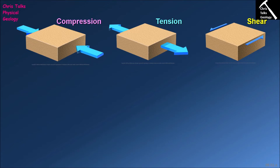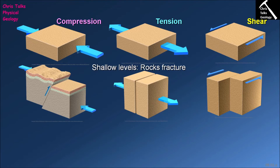Shear stress is commonly associated with transform plate boundaries where two pieces of crust simply move past each other. Now, what happens to a block of rock if we apply these three stresses in the upper 10 to 15 kilometers of the earth's crust? At these relatively shallow levels, rock is going to behave in a brittle fashion — it will break when we apply a sufficiently large stress.